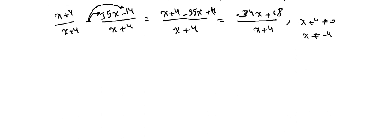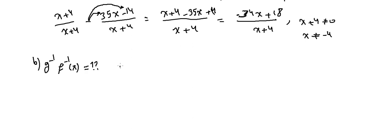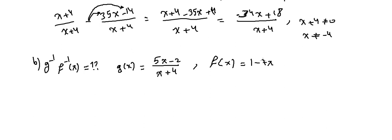Part b asks us to find g⁻¹ of f⁻¹ of x. First we need to find both g inverse and f inverse. We have g(x) = (5x minus 2) over (x plus 4) and f(x) = 1 minus 7x. Let's start by finding g inverse.